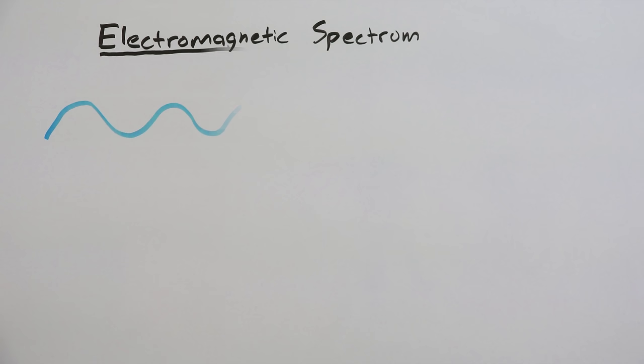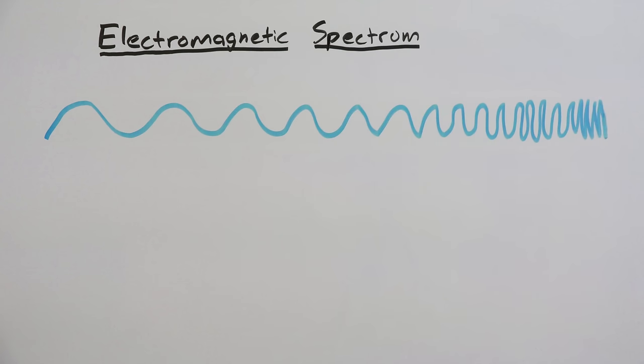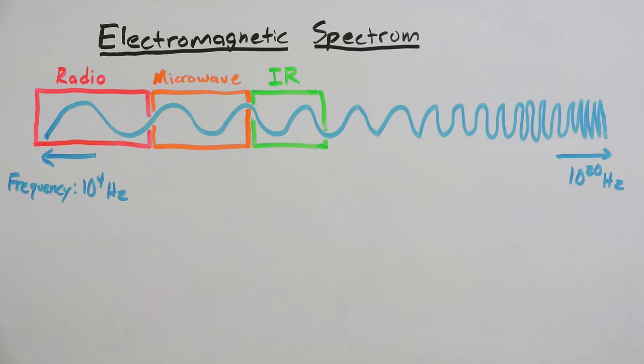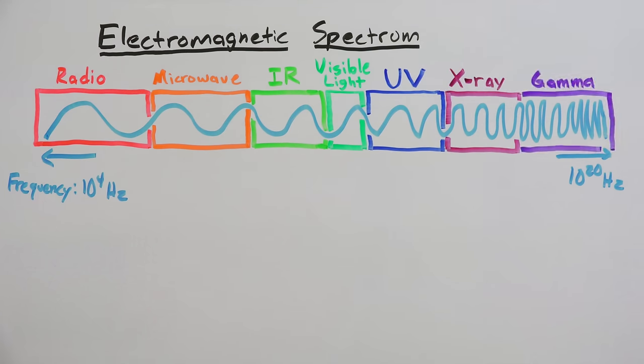Before getting into how each of these systems works, it's important to understand the electromagnetic spectrum. This is a range of electromagnetic radiation ranging from radio waves, microwaves, infrared, visible light, ultraviolet, x-rays, and gamma rays.